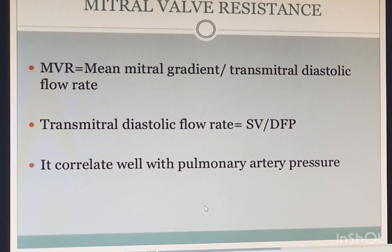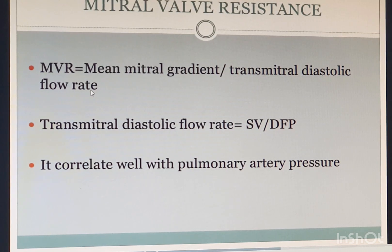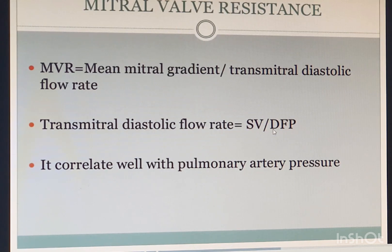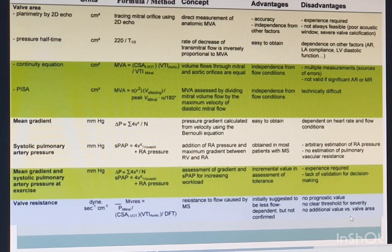Mitral valve resistance measures the resistance caused by mitral stenosis. The formula is: mitral valve resistance = mean gradient / trans-mitral diastolic flow rate. The diastolic flow rate is obtained by dividing the LVOT stroke volume by the diastolic filling period. Divide the mean gradient by this diastolic flow rate and you get the mitral valve resistance.